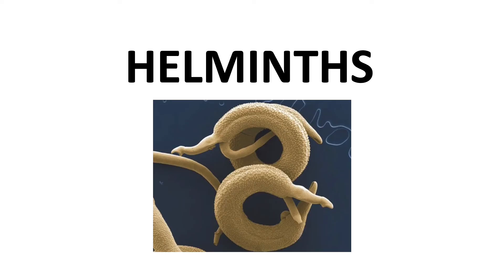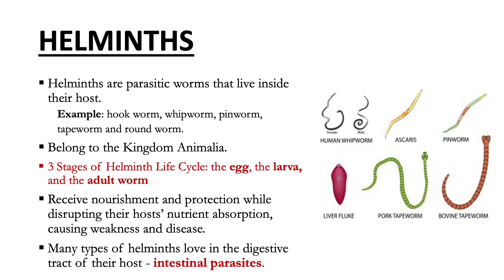Now we'll move on to helminths, or worms. Although helminths are not microorganisms, their microscopic stages — their eggs and larvae — in the life cycle of these parasites are medically important. Helminths infect humans, other animals, and plants. They are multicellular eukaryotic organisms in the Kingdom Animalia. The typical helminth life cycle includes three stages: the egg, the larva, and the adult worm. They receive nourishment and protection while disrupting the host's nutrient absorption, causing weakness and disease. Many types of helminths live in the digestive tract and are referred to as intestinal parasites.